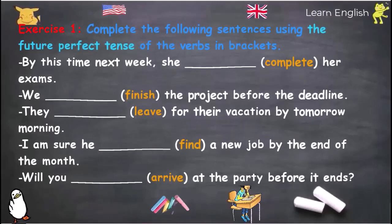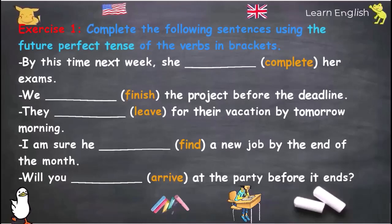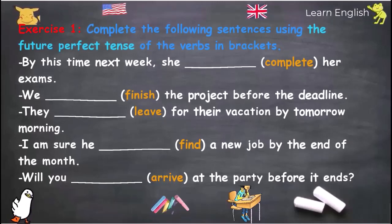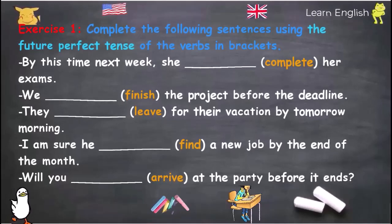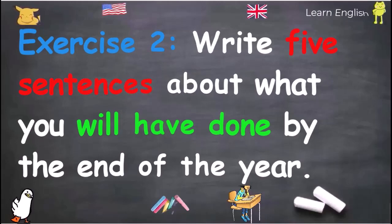Practice Exercises. Exercise 1: Complete the following sentences using the Future Perfect Tense of the verbs in brackets: 'By this time next week, she (complete) her exams.' 'We (finish) the project before the deadline.' 'They (leave) for their vacation by tomorrow morning.' 'I am sure he (find) a new job by the end of the month.' 'Will you (arrive) at the party before it ends?' Exercise 2: Write 5 sentences about what you will have done by the end of the year.